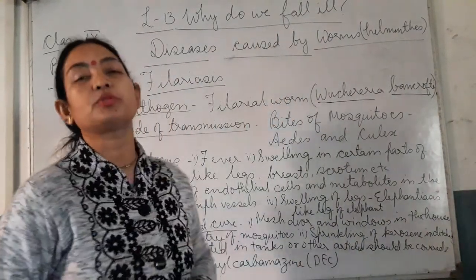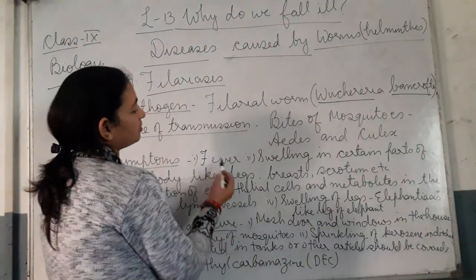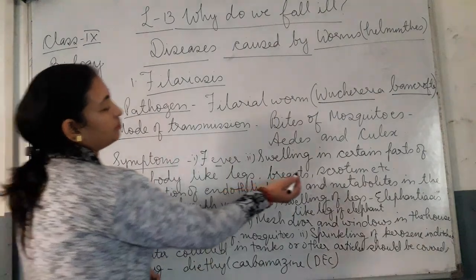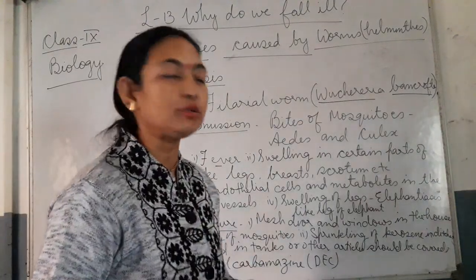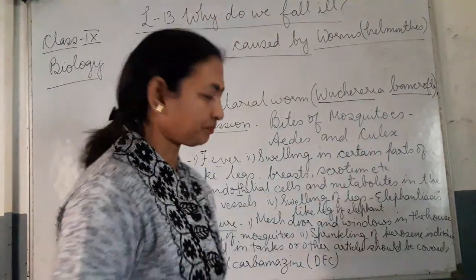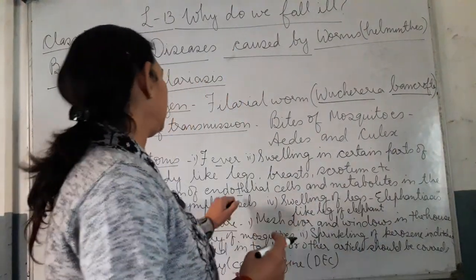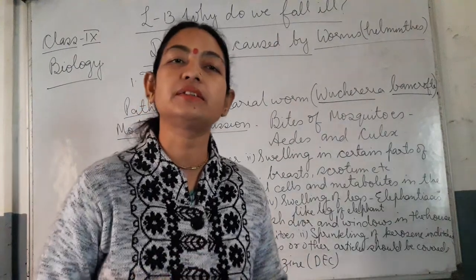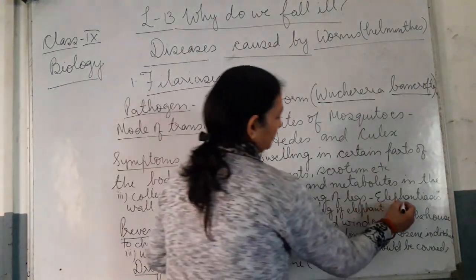Now let us see the symptoms of this disease. The main symptom is fever. Then you have swelling in certain parts of the body like legs, breast, scrotum, etc. The reason for the swelling is the collection of endothelial cells and metabolites in the wall of the lymph vessels, which causes swelling in some definite parts of the body. Mainly it occurs in the legs.